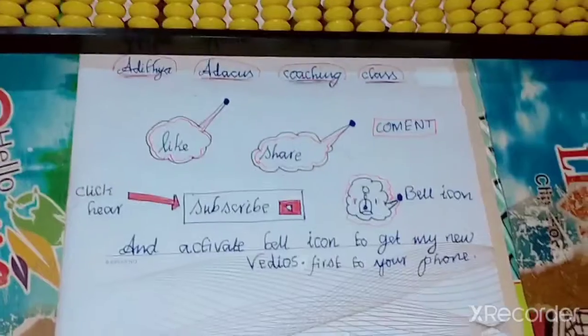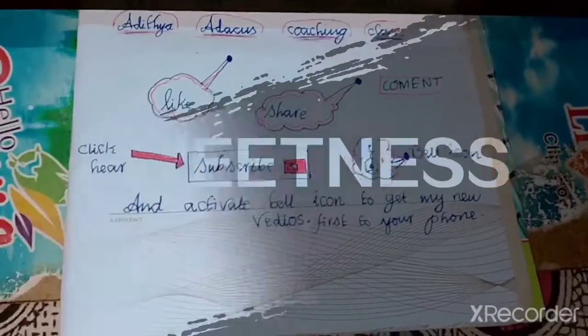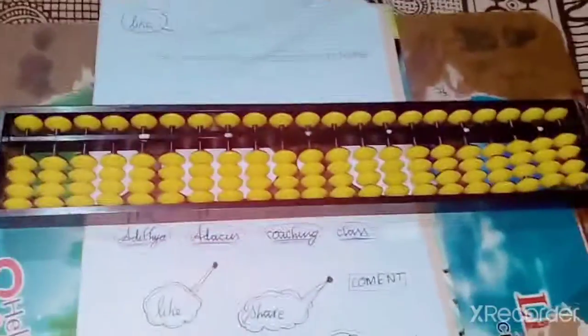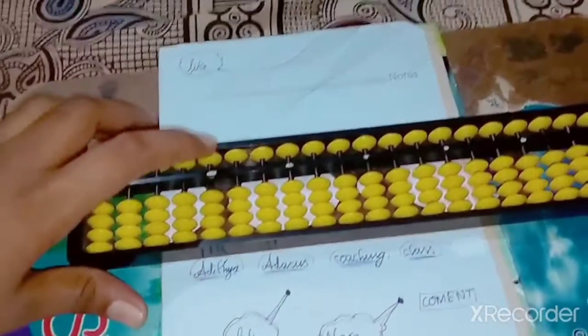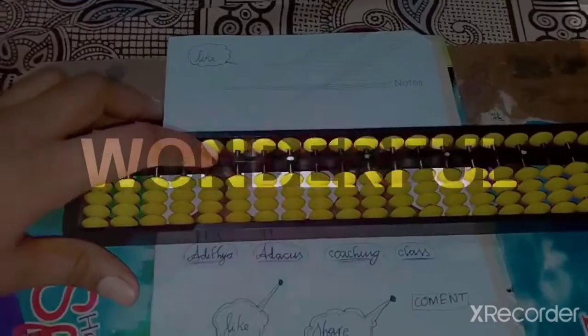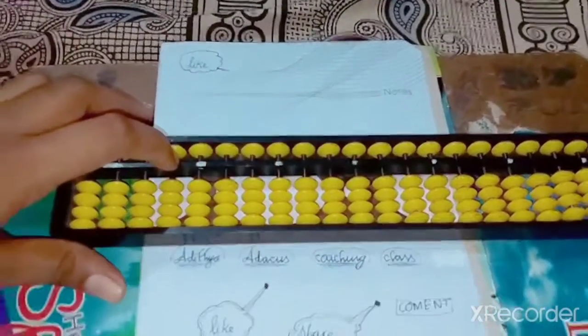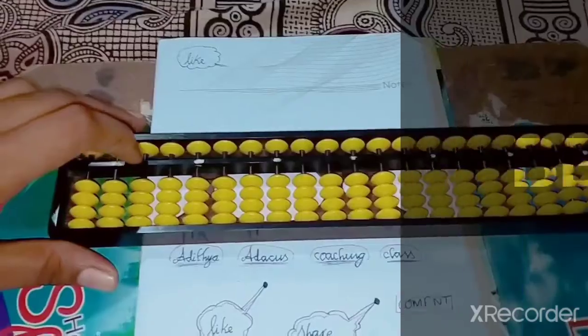Now we can learn about the Abacus and different parts of Abacus. Friends, see this Abacus. We will say as Abacus. You can see the dots position. We will say as ones. And after the dots, you can say as tens. After that, hundreds.